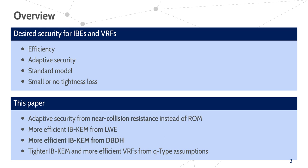However, we won't have the time to discuss all constructions in detail. Therefore, I will focus on introducing near-collision resistance as a natural assumption for hash functions to efficiently replace the random oracle, and on showcasing our techniques by using them to construct an IBE scheme from the decisional bilinear Diffie-Hellman assumption.